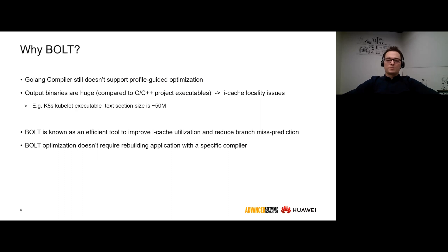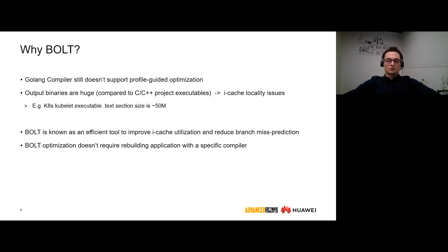Why do we need Bolt for GoLang? The GoLang compiler still doesn't support profile-guided optimization, which is known to be a very efficient performance optimization, and we would like to improve performance of our applications. As mentioned, GoLang builds the project, all dependencies, and runtime into a static executable, so it causes generation of huge binaries, and as a result there are issues with instruction cache locality. Bolt is an efficient tool for improving instruction cache utilization and reducing branch mispredictions. Bolt doesn't require rebuilding the application with a specific compiler, so we have no limitations on toolchain selection and can keep using the GoLang compiler for building GoLang projects.